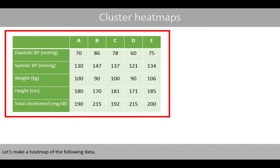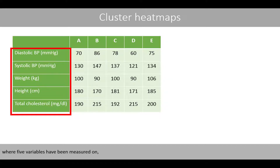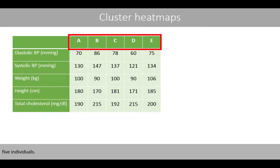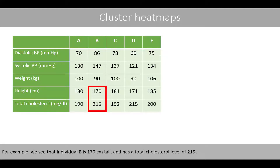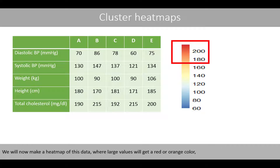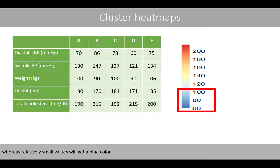Let's make a heatmap of the following data, where five variables have been measured on five individuals. For example, we see that individual B is 170 centimeters tall and has a total cholesterol level of 215. We'll now make a heatmap of this data where large values will get a red or orange color.